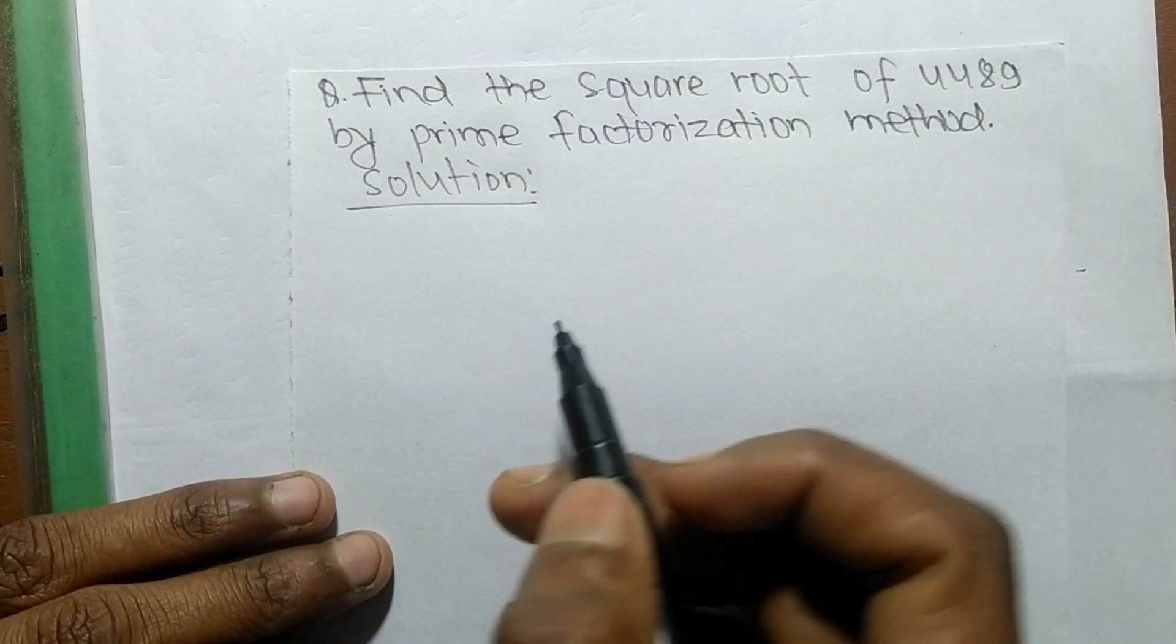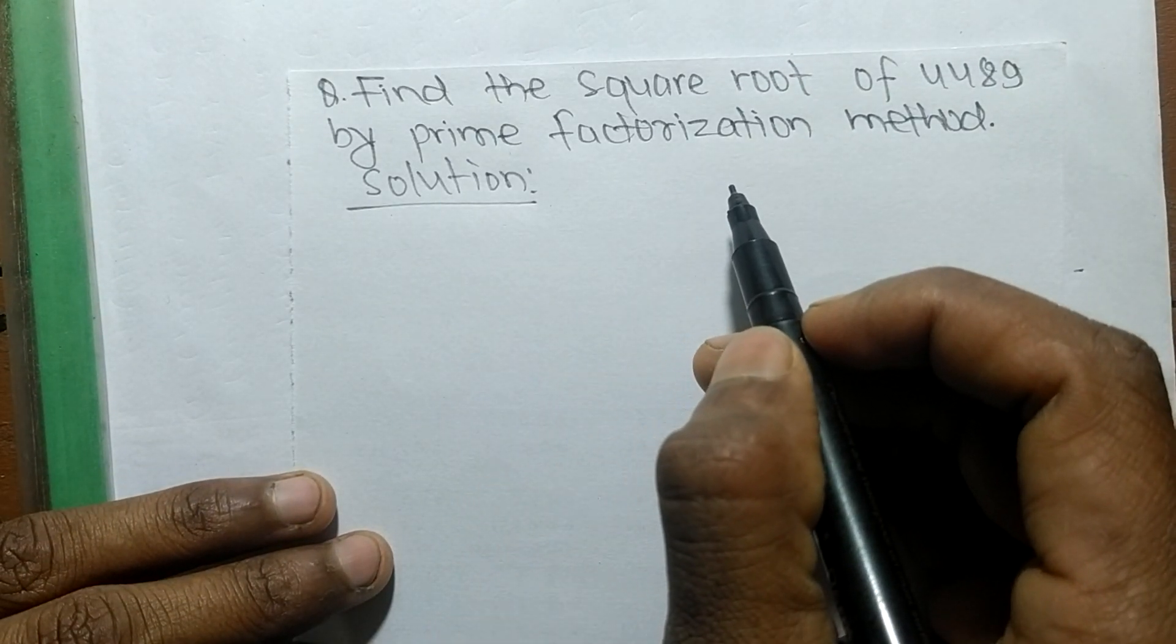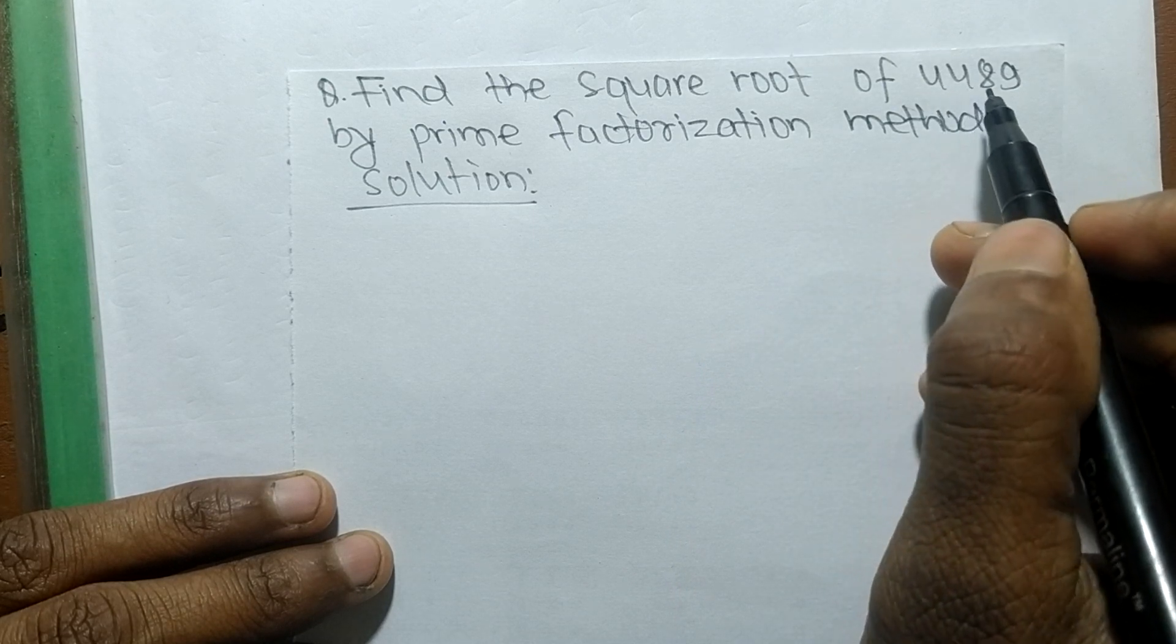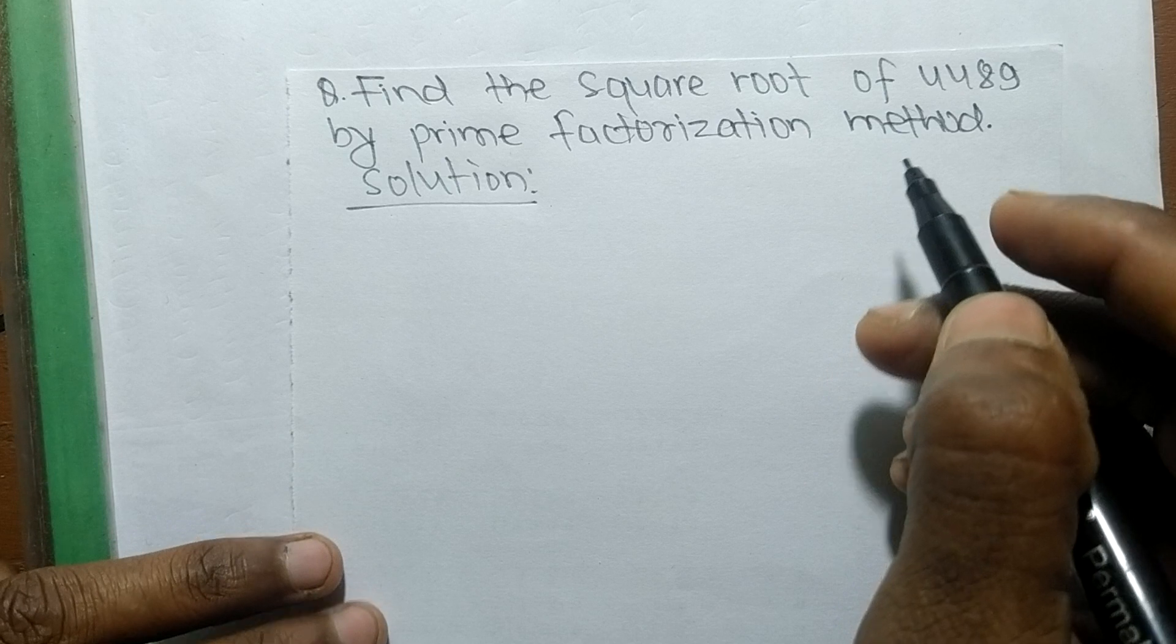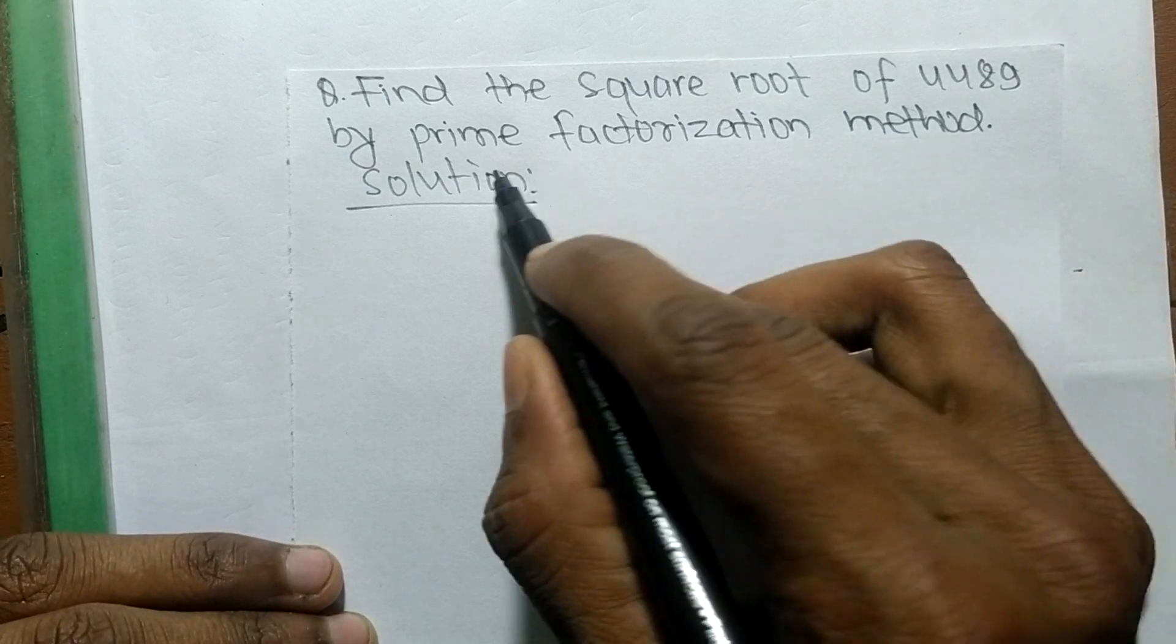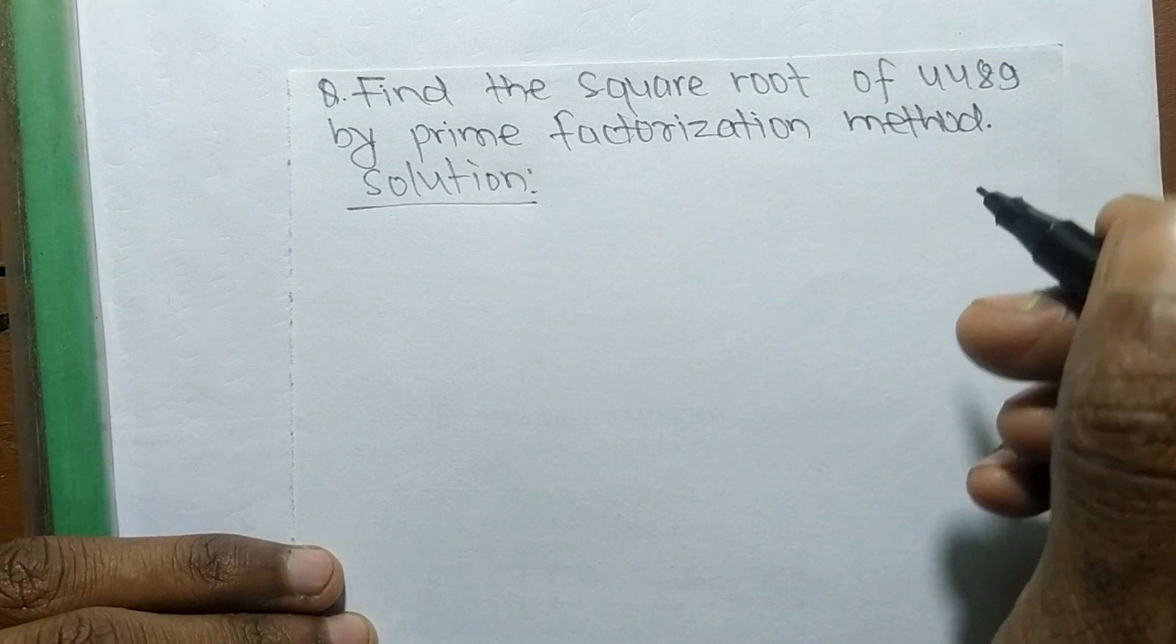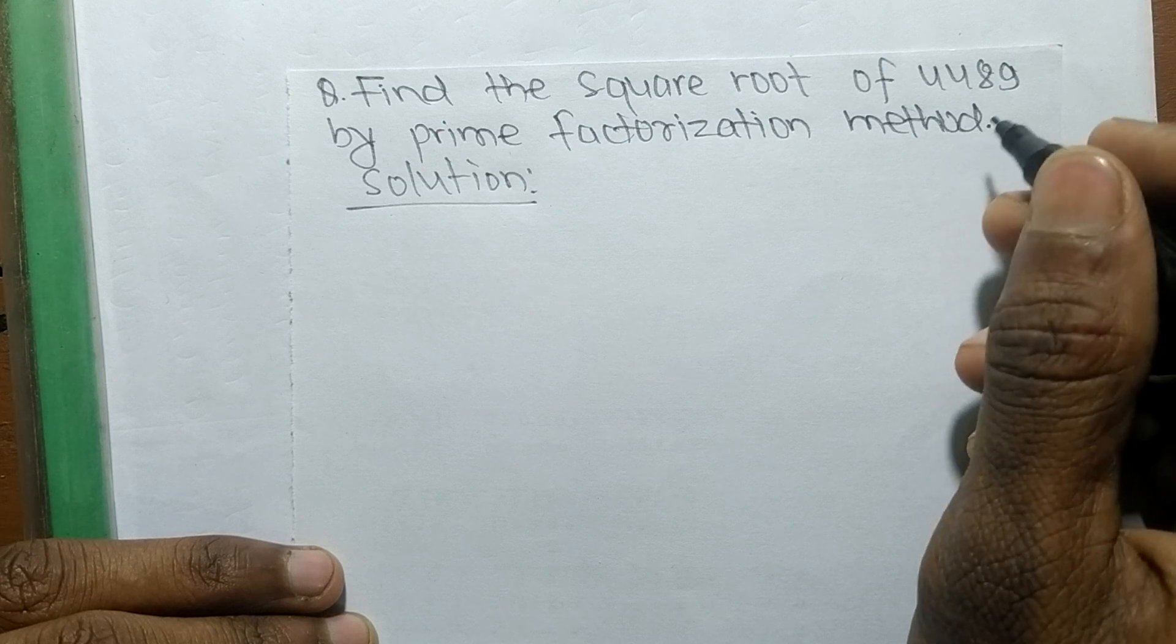Today in this video, we shall learn to find the square root of 4489 by prime factorization method. To find a square root by prime factorization method, first we have to find the prime factors.